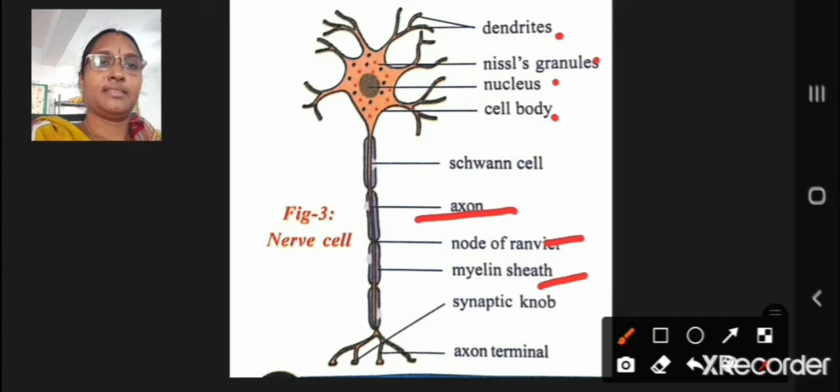The myelin sheath is made up of schwann cells and chiefly consists of fatty material. These are schwann cells.